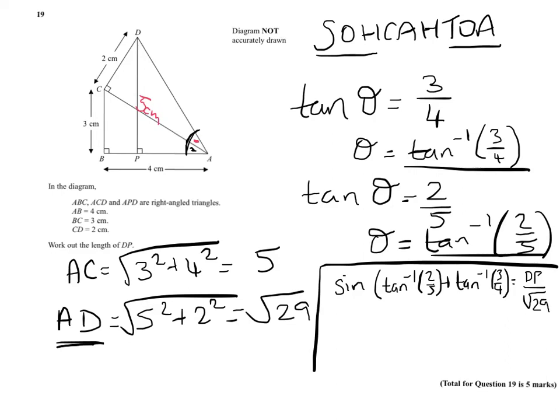We now need to rearrange all of this, so we end up with DP equal to root 29 multiplied by sine of these angles. You could work out each of these individually, but so that we don't have any rounding errors, it's probably best to keep it the same.